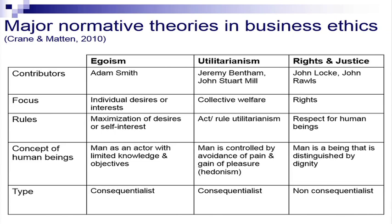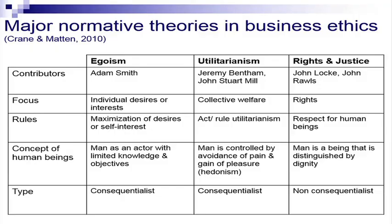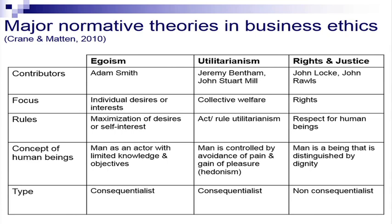Some theories in business ethics: egoism, utilitarianism, and rights and justice. In egoism, a person puts his or her individual desires and interests before everyone else's — the benefit coming to me is more important than the benefit going to anyone else. If I get what I need from this situation, it is okay; if I do not, then it is wrong. We try to maximize desires or self-interest. It is a consequentialist ethic — the end result is more important than how you get it. If the profit is more than the loss, whatever was done is considered all right.